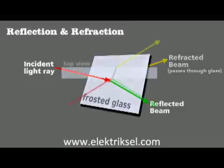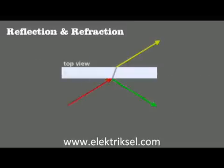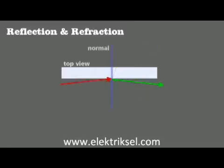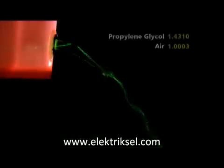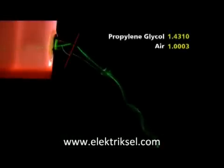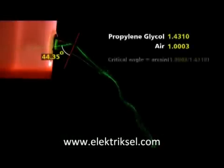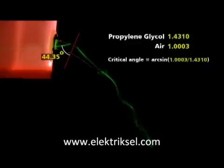It's easier to see from a top view. Reflection and refraction can happen at the same time, but if a light ray hits the surface at an angle greater than the critical angle, it will be completely reflected and not refracted. For this propylene glycol in air system, as long as a beam hits the surface at an angle greater than 44.35 degrees measured from the normal, it will propagate down the stream via total internal reflection.